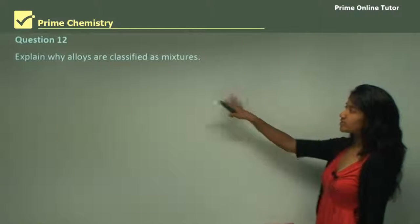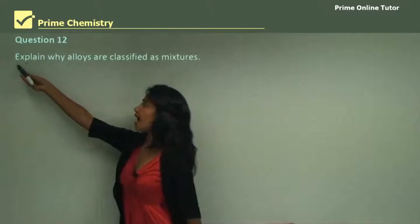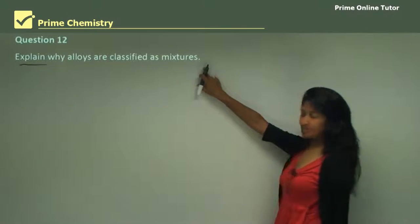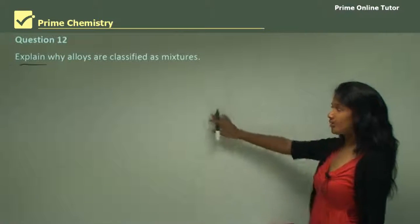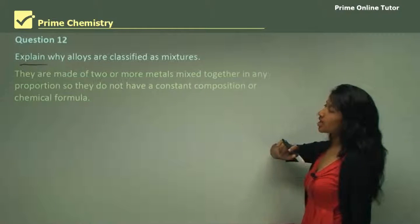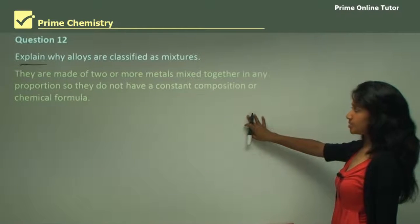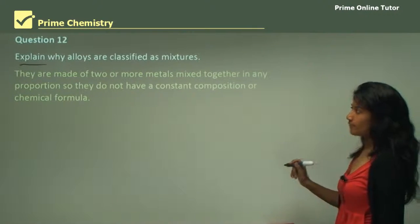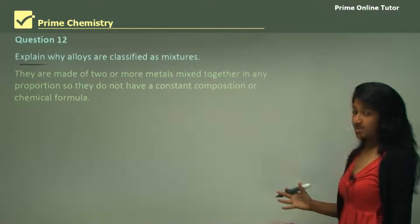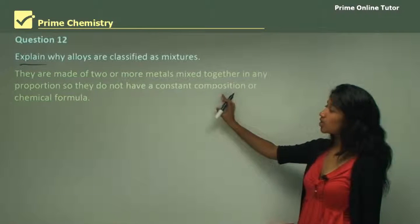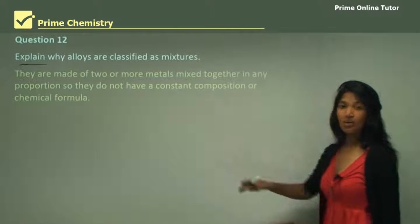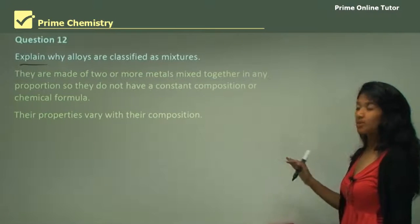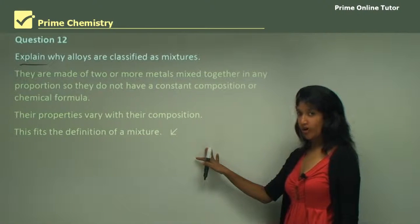In this question we need to highlight the key verb, which is 'explain,' and see why alloys are classified as mixtures. Mixtures are made of two or more metals mixed together in any proportion, so they do not have a constant composition or chemical formula. Since alloys vary in their composition, they do not have a constant composition or chemical formula, and that is exactly why they are called mixtures. Their properties vary with their composition, which fits the definition of a mixture.